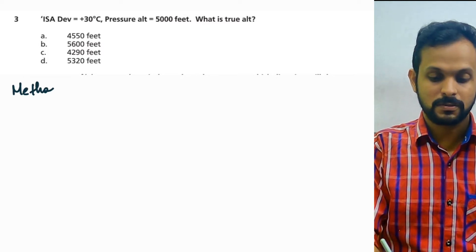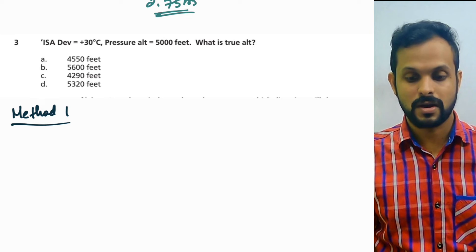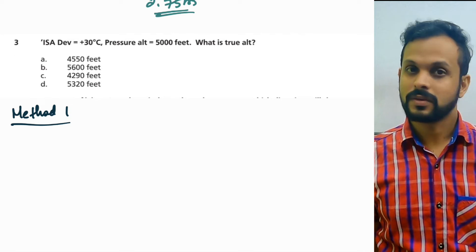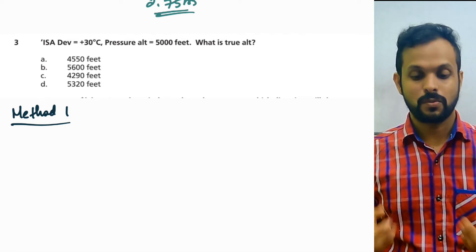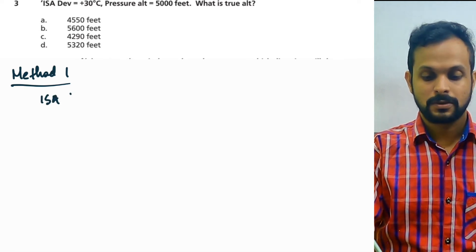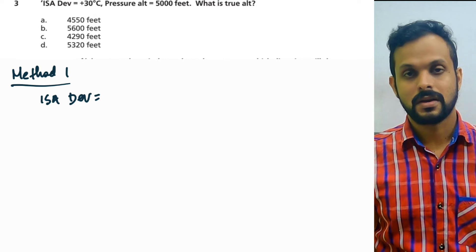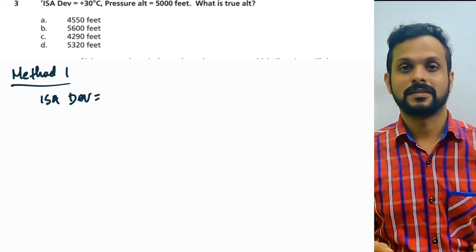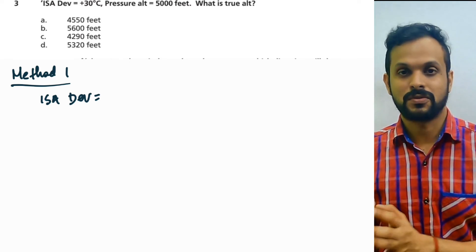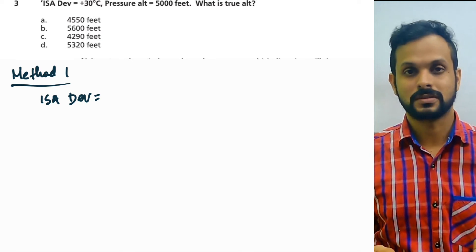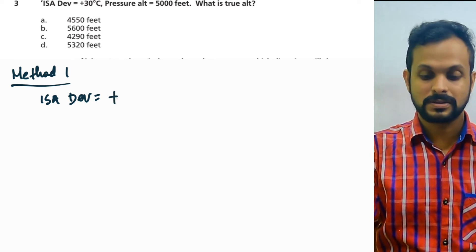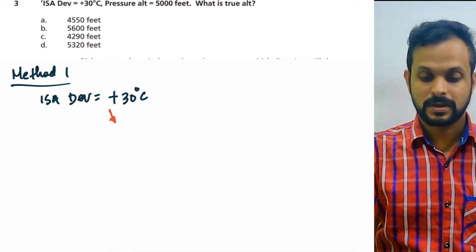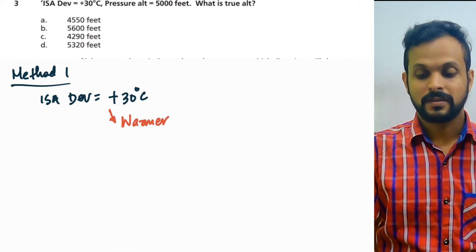Let's go to the very first method — Method 1. If you already know how to do it in both methods, pause the video, do it yourself, and come back to check the answer. ISA deviation is plus 30 degrees Celsius. The basic understanding of ISA deviation: aircraft are calibrated to follow ISA values up to 32 kilometers, and the practical day is definitely different from the ISA day. How much the real atmosphere deviates from the ISA day is the ISA deviation. So plus 30°C means that particular day is 30 degrees Celsius warmer.